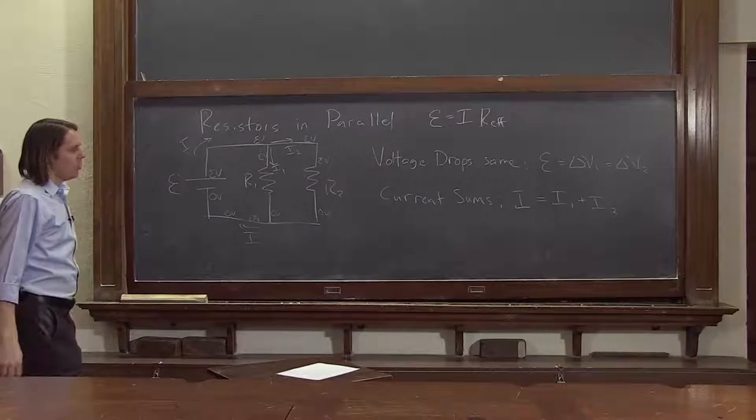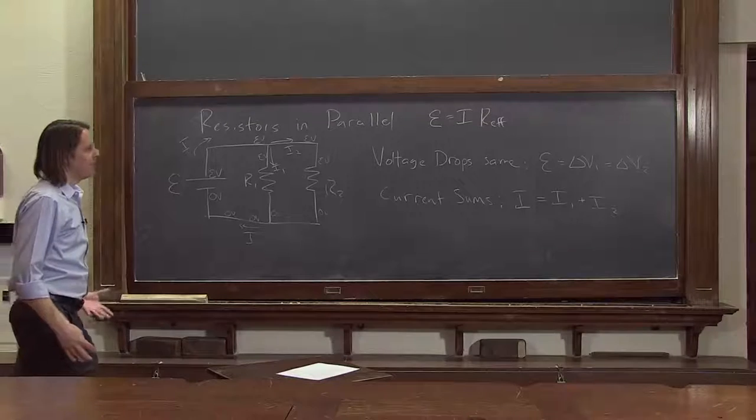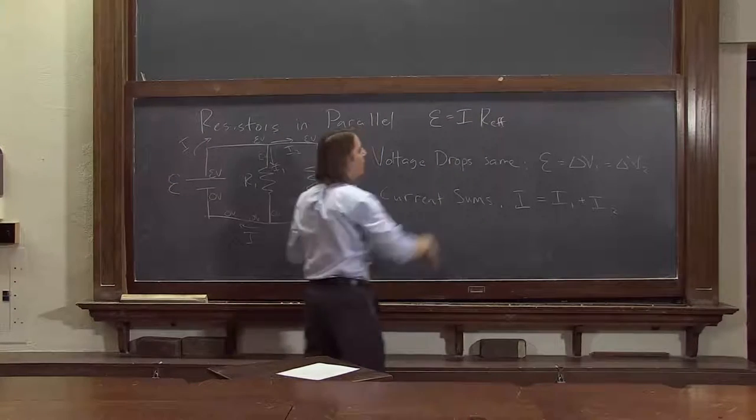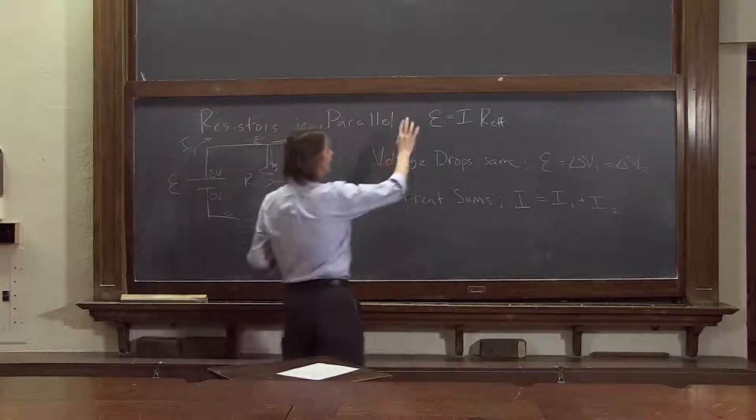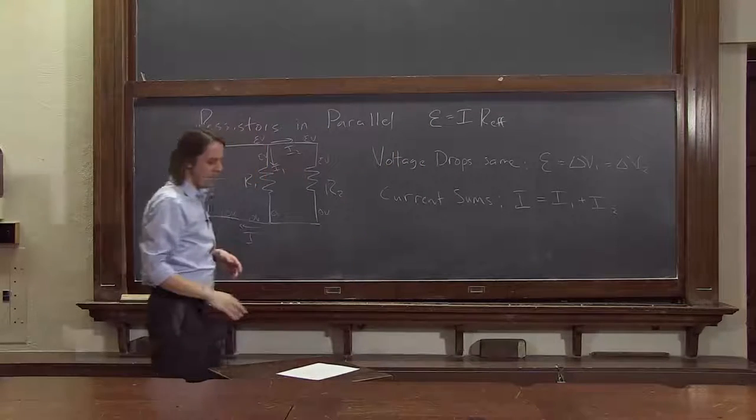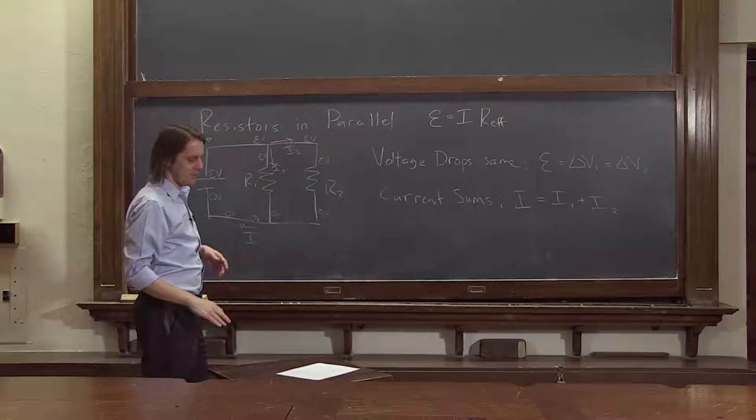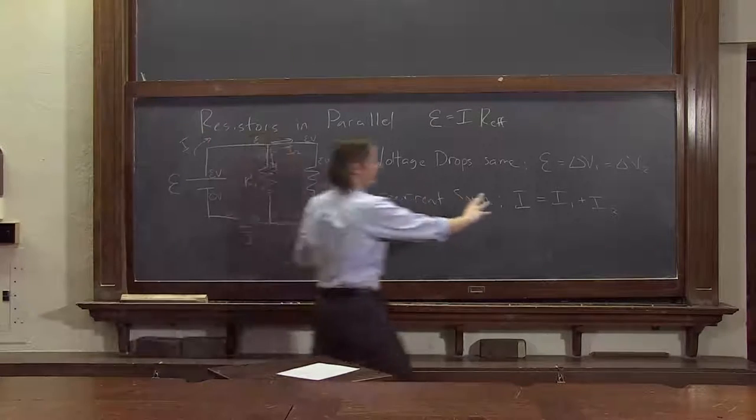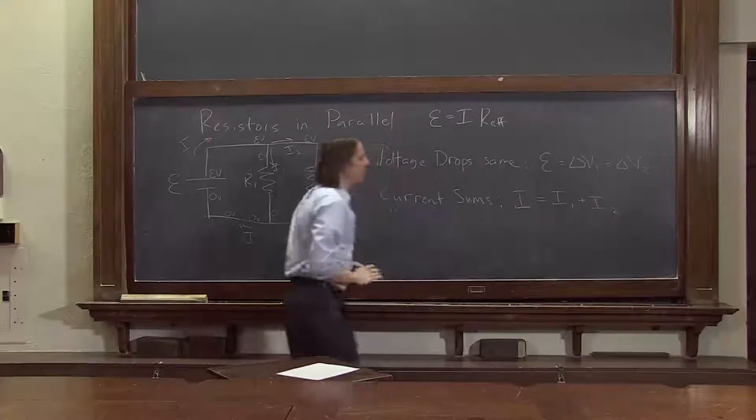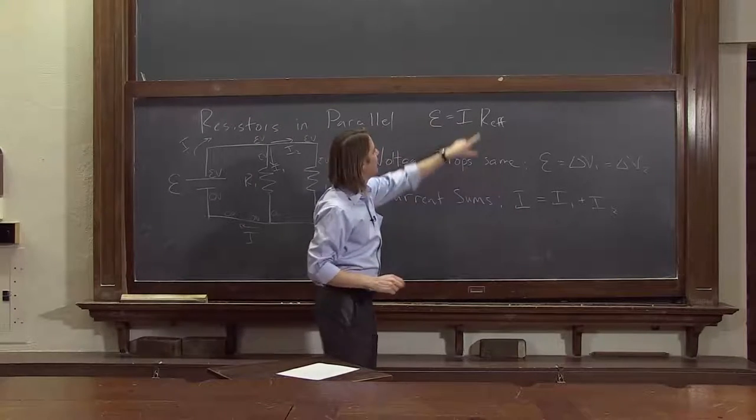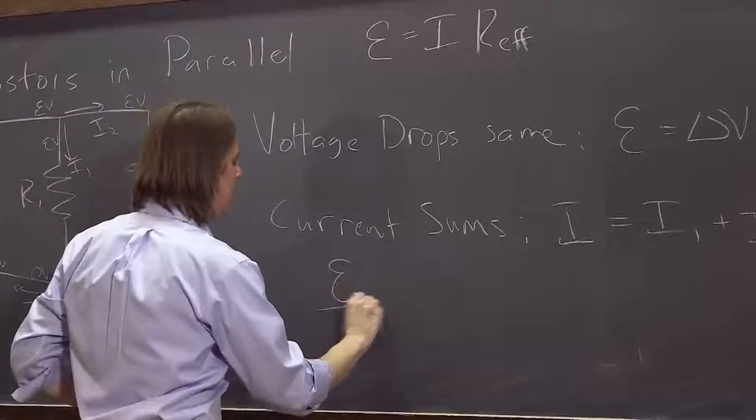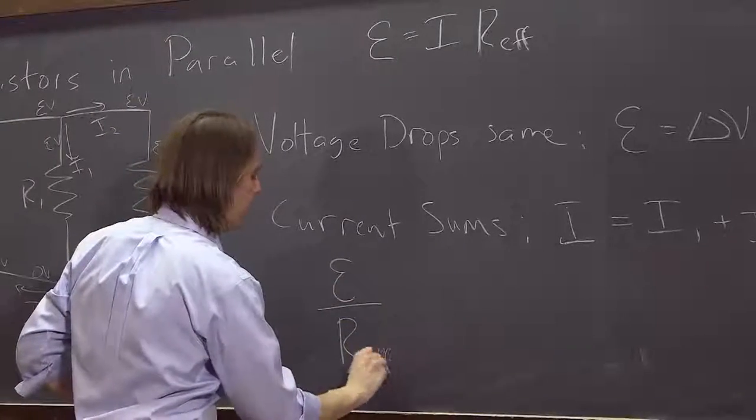So now, what we want to do is try to combine these again in a way that we can figure out what R effective is. So let's look. We're going to use this equation. We're going to substitute in for these currents. So this we know is the EMF over R effective. So E over R effective.